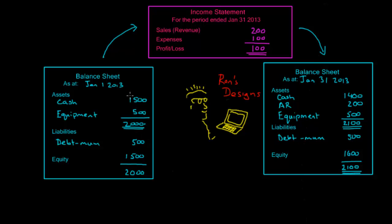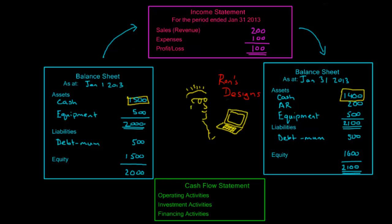You'll notice one thing — the cash started off at $1,500 and we ended up with $1,400 in cash, yet we made a profit of $100. There's another statement known as the cash flow statement, which helps us understand and reconcile how the cash at the start of the period went in and out of the business and ended up at the end of the period. Here's the cash flow statement. It helps us understand and reconcile how we went from $1,500 cash at the start to $1,400 at the end, notwithstanding that we made a profit of $100 during the period.